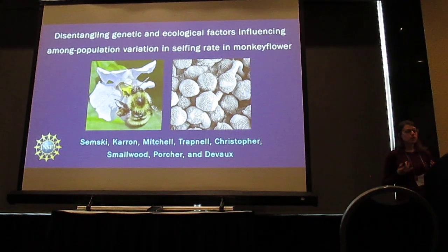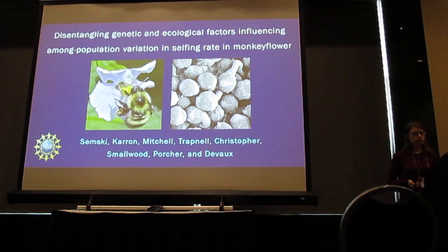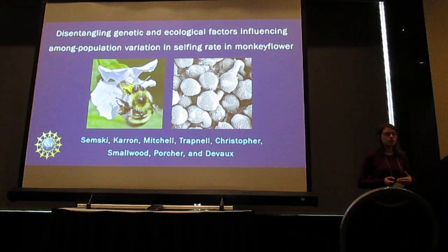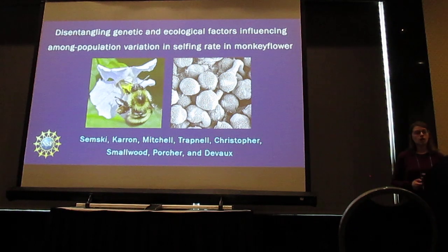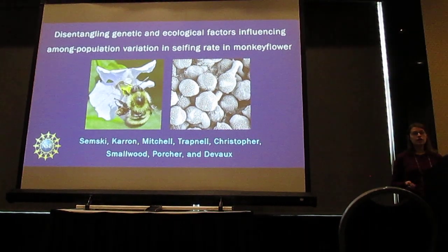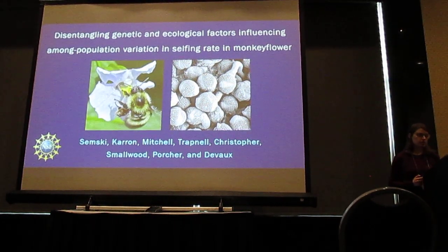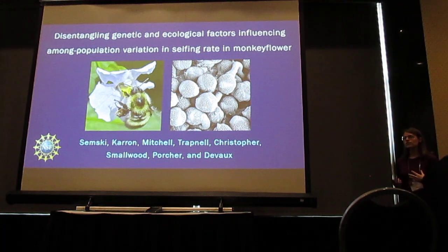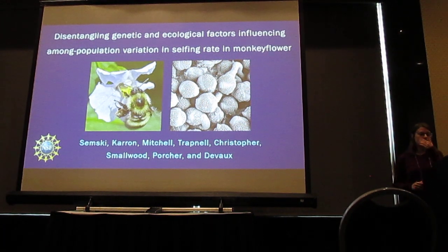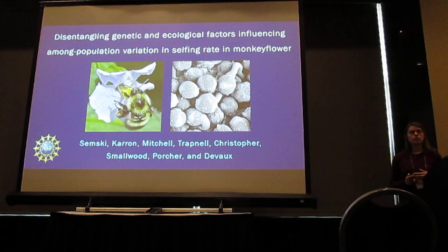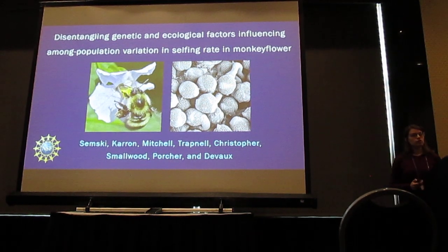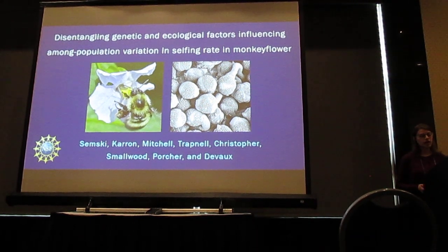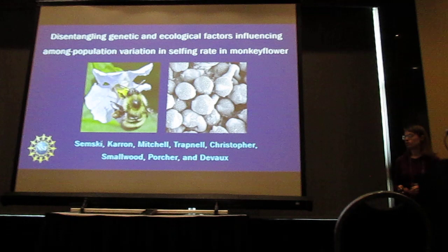Most flowering plants are hermaphroditic, and yet the proportion of seeds fertilized by self and outcrossed pollen varies widely, both among species and even among populations within species. This intraspecific variation in mating system can influence the genetic structure of populations, the extent of gene flow, effective population size, and the expression of inbreeding depression.